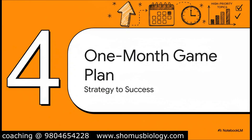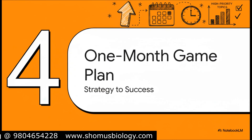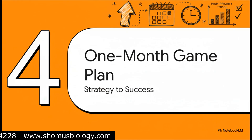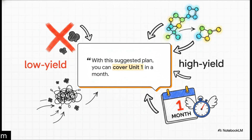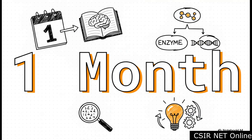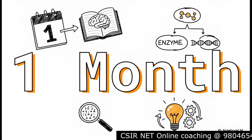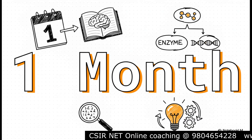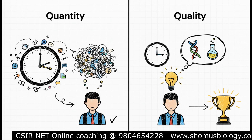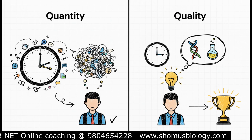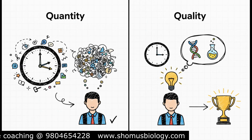So you've got your high priority list and you understand the exam style. The big payoff for being so strategic: by cutting out all the low-yield fluff and hammering the high-impact areas we've identified, it is completely possible to cover the core of Unit 1 in just one month. Let that sink in — one month. The unit that feels like an entire degree course can be strategically conquered in a single month of focused, dedicated study. This isn't about cramming. It's about being incredibly smart with your time and energy. Success in the CSIR NET isn't just about the number of hours you clock in — it's about the quality of those hours and studying what matters most.